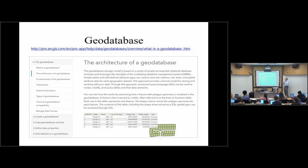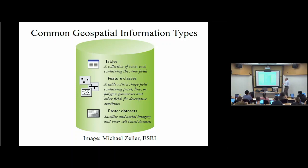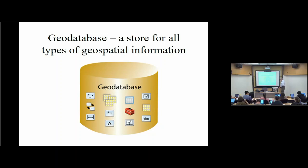We've got this thing called a geodatabase, and we're going to go into some detail about what a geodatabase means. Inside ArcGIS Pro there's help about geodatabases. Key to this are three kinds of information: tables — collections of rows containing the same fields; feature classes — tables with a shape field added that contain geometries for points, lines, and polygons; and raster datasets for satellite and aerial imagery and other cell-based datasets. These are the main things we're going to be working on in the geodatabase.